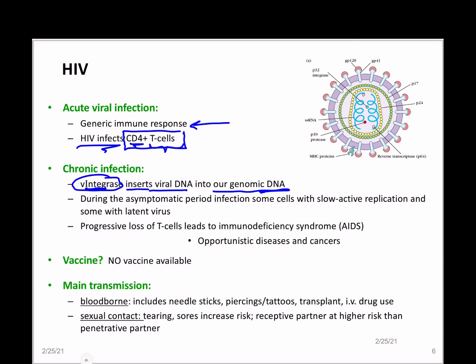During chronic infection, people generally don't have symptoms — that's the asymptomatic period. There may be some slow active replication, but the immune system is still strong enough to keep it down. Some infected cells aren't actively replicating; they have latent virus that can't be targeted by any existing agents. For most healthy people, there's a balance where the immune system doesn't suffer too much.